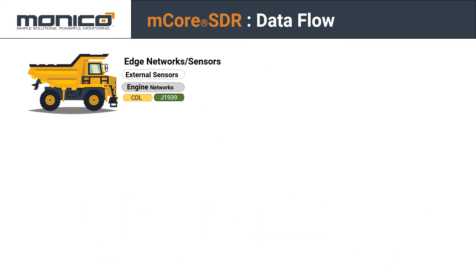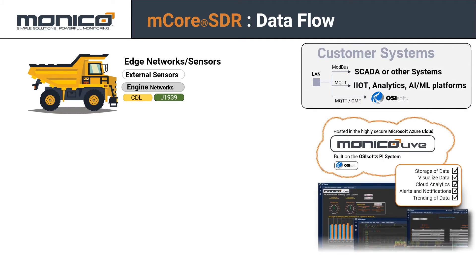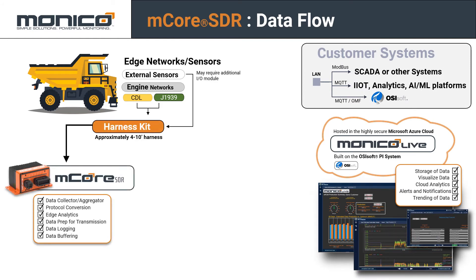Out in the field you have your asset, which has an edge network of some kind, whether that's a CAN bus or external sensors. Over on the right side, we have a customer system — either a SCADA system, an industrial IoT platform, or OSI SoftPi. On the bottom right, we have Monaco's solution, Monaco Live, which is a remote condition monitoring solution hosted in the cloud and built on the OSI SoftPi system.